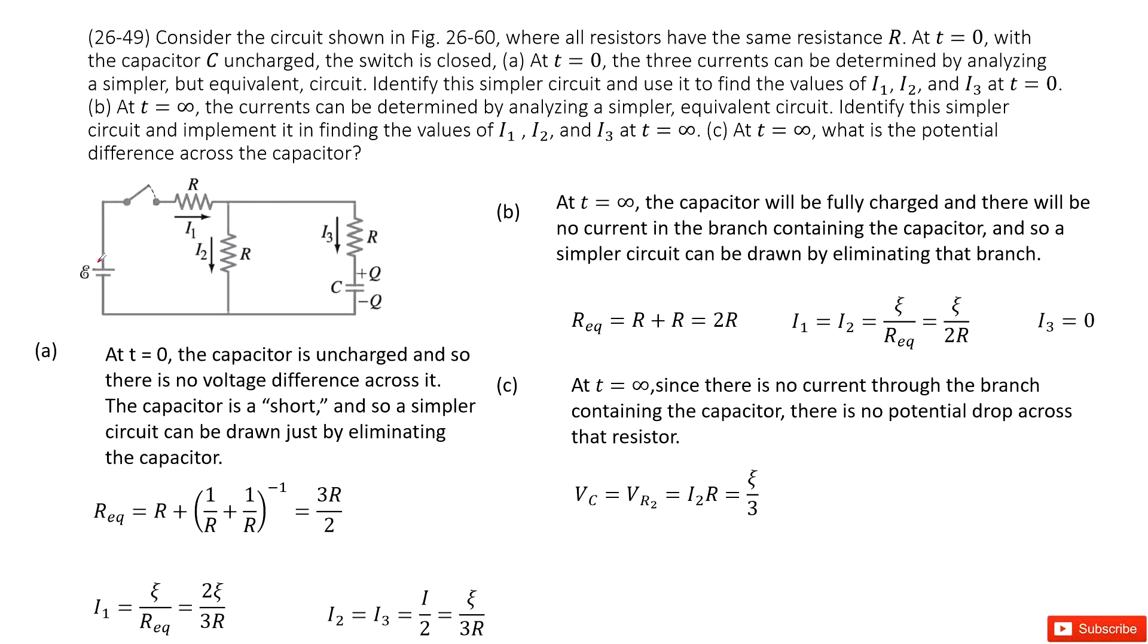Initially, the three currents can be determined by analysis of simple equivalent circuits. So we need to find the current I1, I2, I3 at t equal to 0. We can see at t equal to 0, this capacitor is uncharged. When we close it, of course, this capacitor will get the charges.